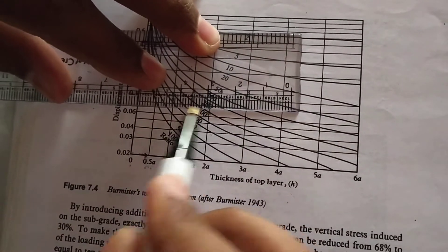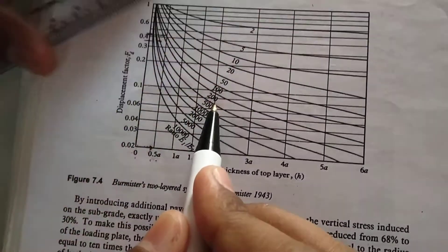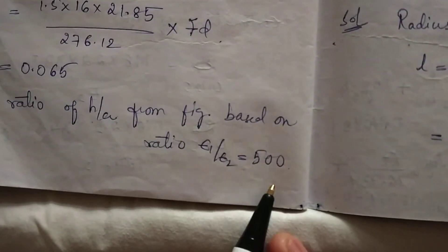At H by A equal to 2, I will find it. So I will take E1 by E2 as 500.